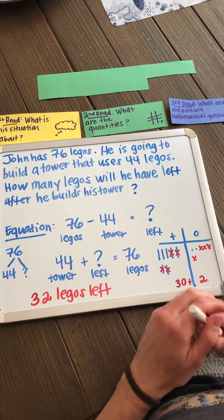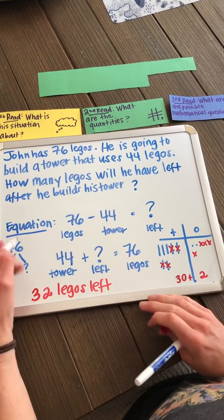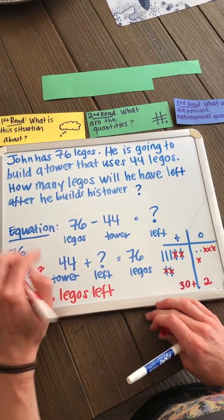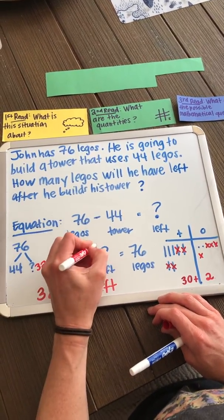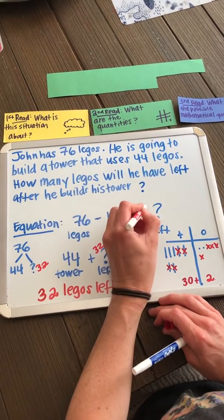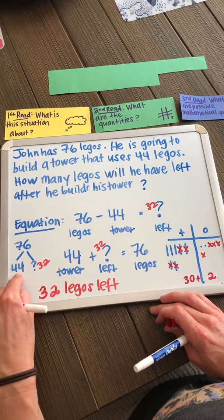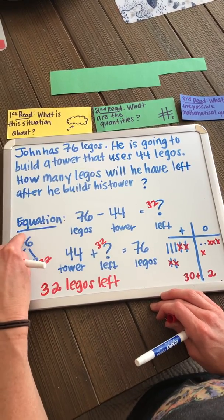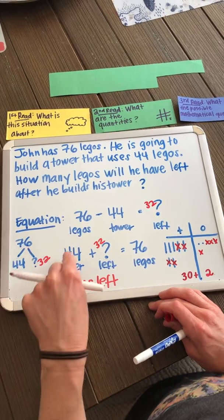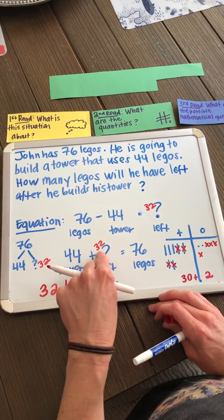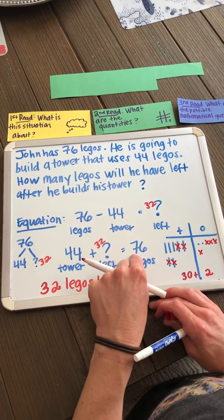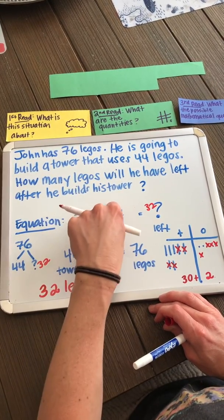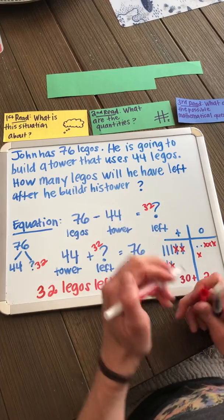I can check my work by seeing if 32 makes sense where the question mark was. 44 plus 32 does equal 76, and 76 minus 44 does equal 32.